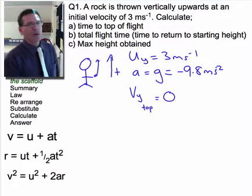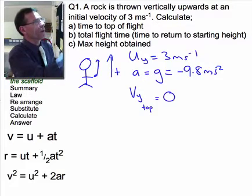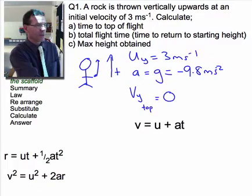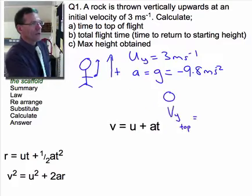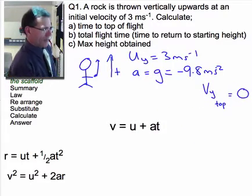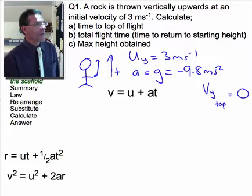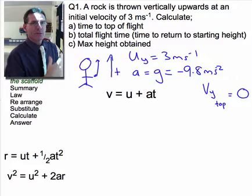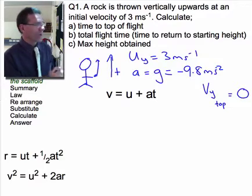Okay, so we've got some data. We've got u, we've got a, we've got v, and we're trying to find t, which immediately means that we're gonna pull this equation out of our toolbox. And we're gonna rearrange this equation now. So we've done our summary step. We've chosen the law. That's the law part of our scaffold. Now we're gonna rearrange.